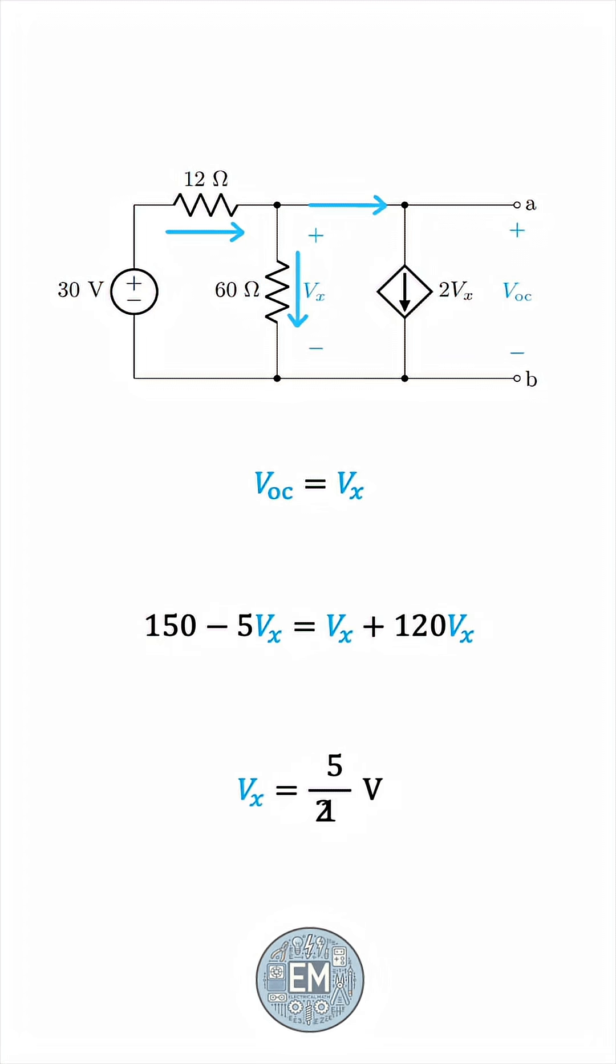We get 25 over 21 volts. So, this is VOC, which is our Thevenin voltage, VTH.